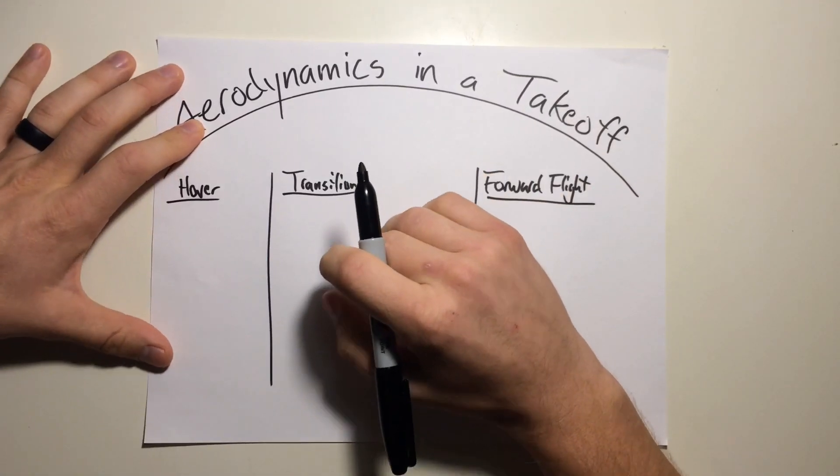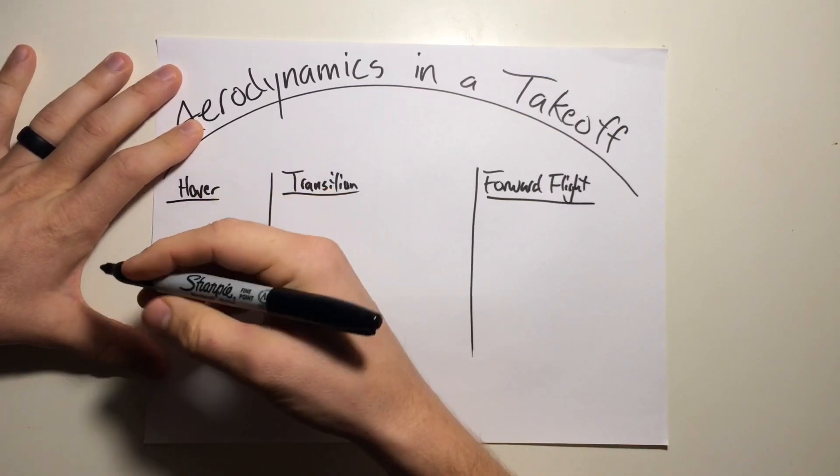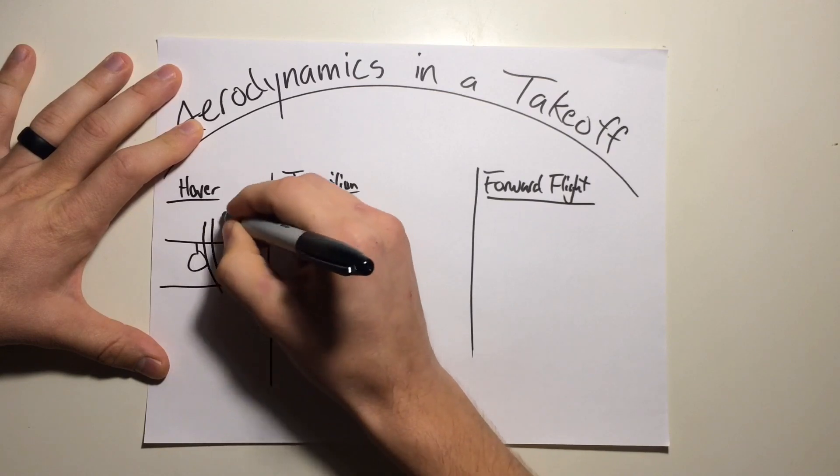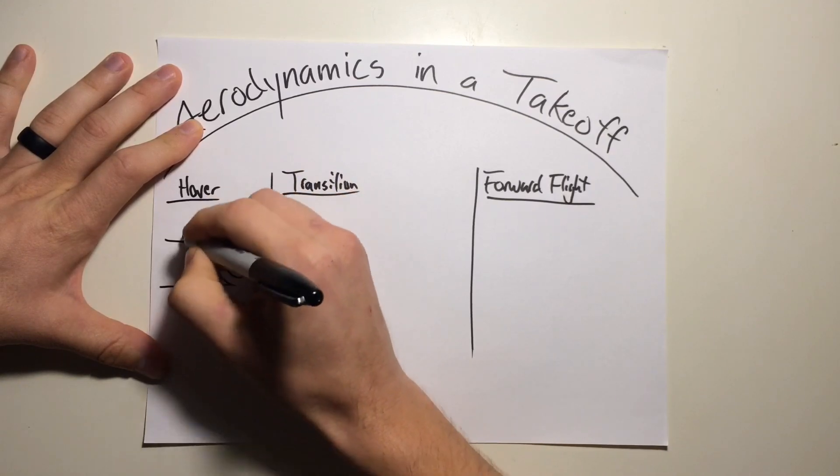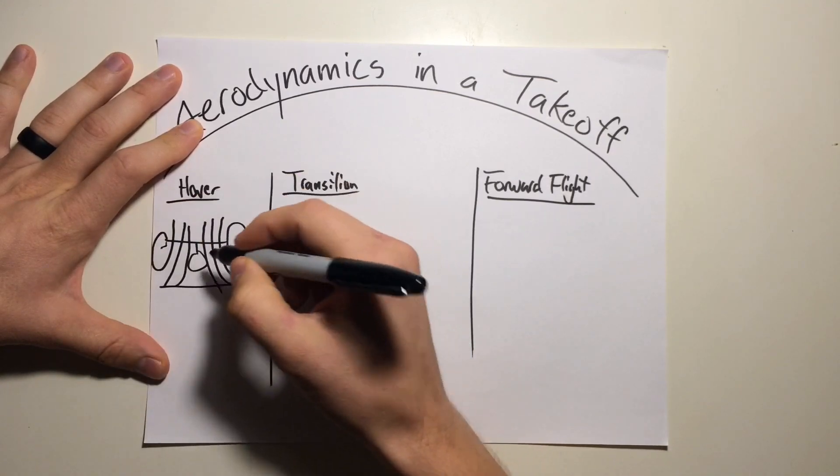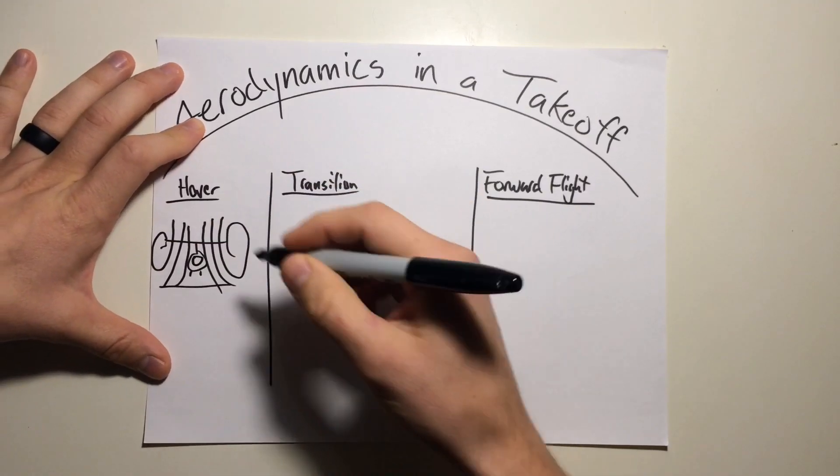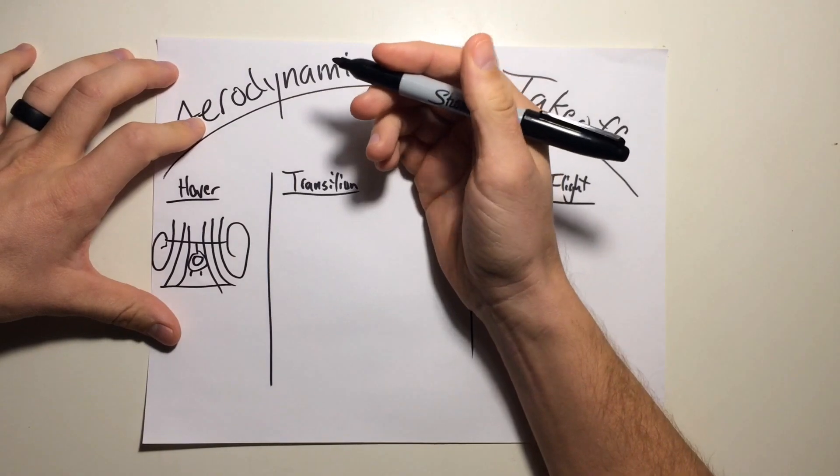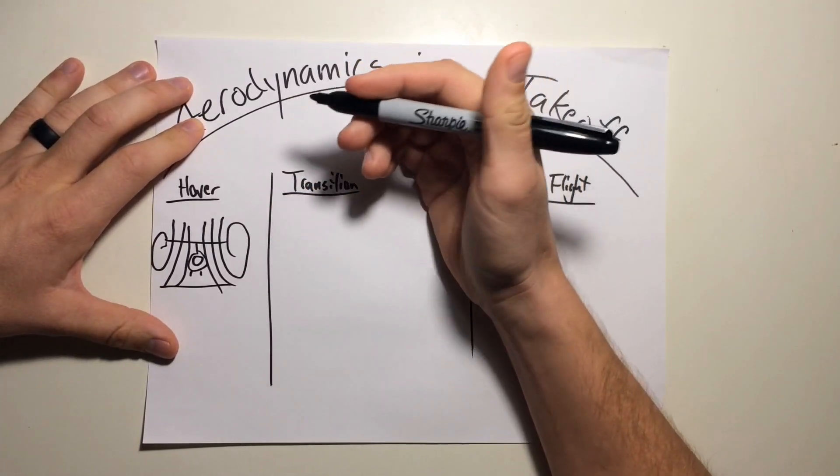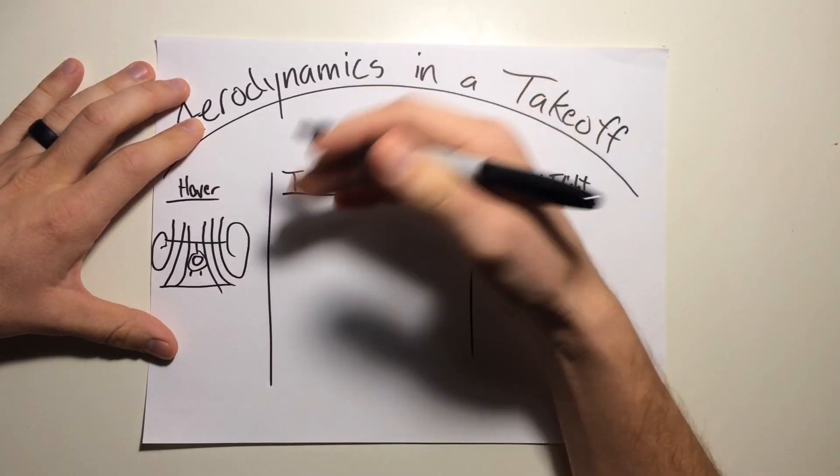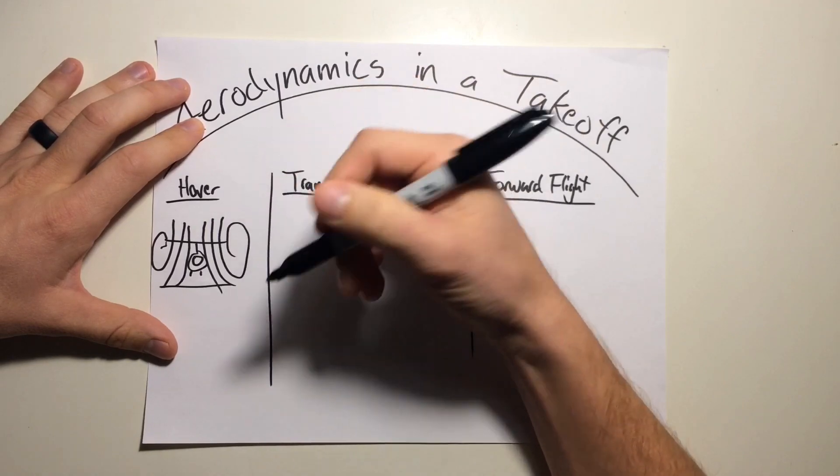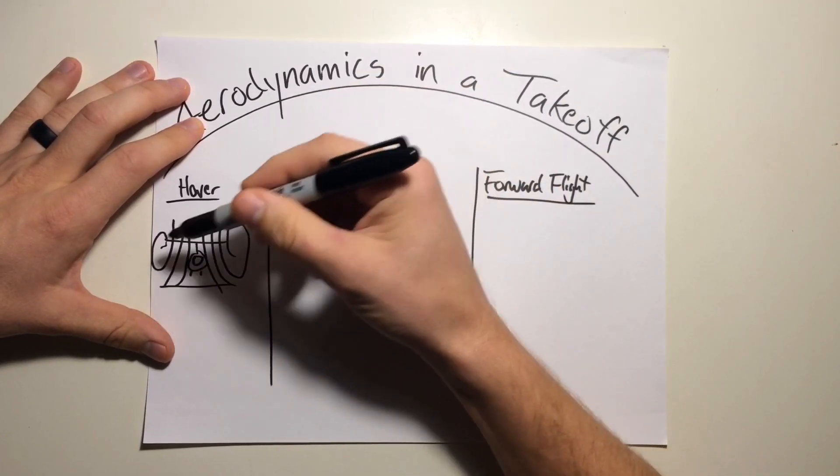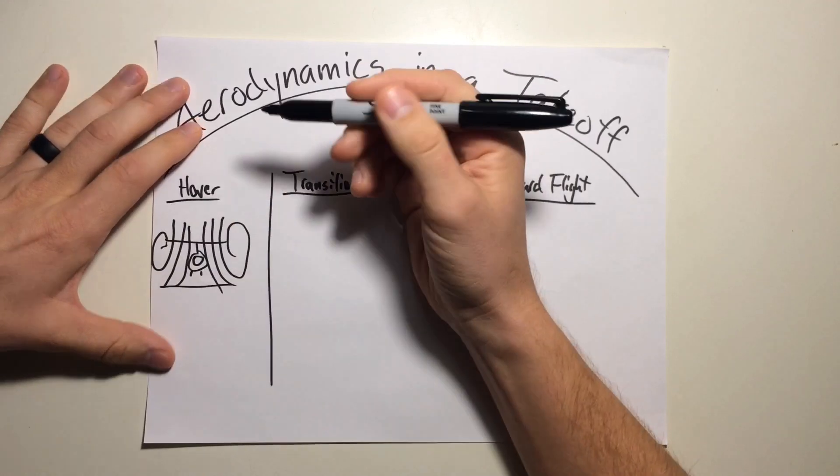Alright so the hover phase, we've already talked about it in our other video. The aircraft is sitting here at a stationary hover, the airflow is vertically coming down through the disc creating these wingtip vortices and relatively inefficient as far as lift goes. Hover flight requires more power than forward flight due to the decrease in efficiency of the rotor system when operating in this disturbed recirculated vortex-filled air.